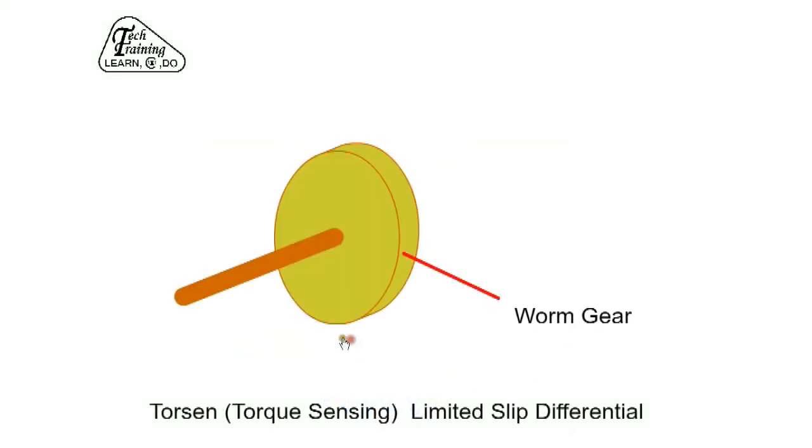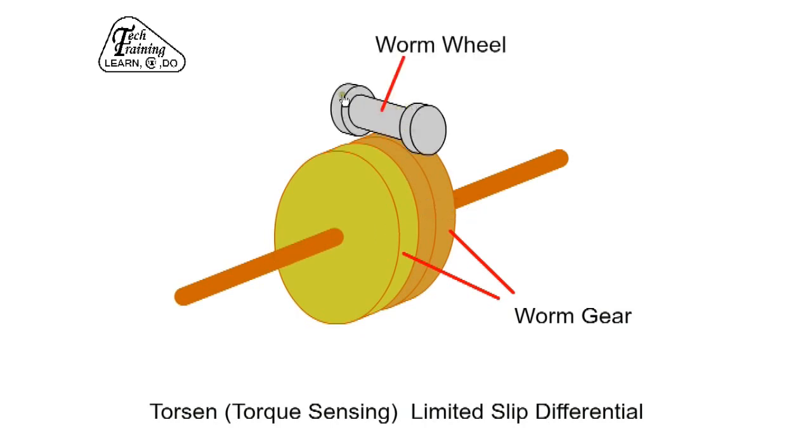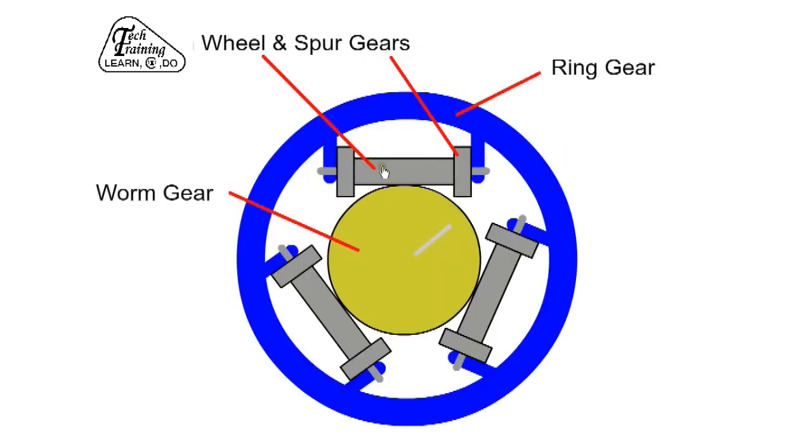The Torsen consists of a worm gear attached to the half shaft. This gear is meshed with a worm wheel that has spur gears at the ends. Here we show one set of worm wheels, but in practice, there are a total of three.